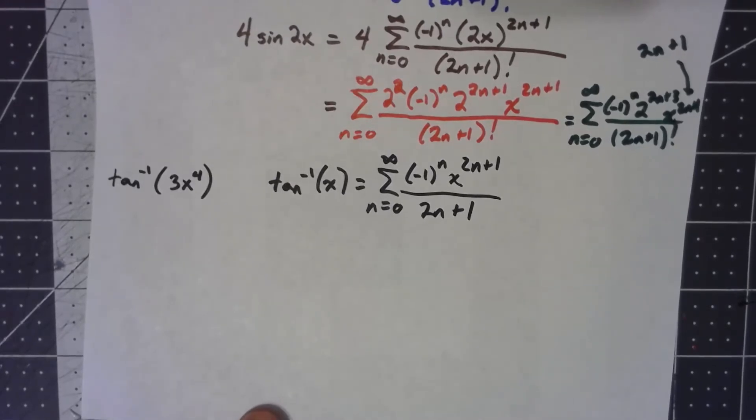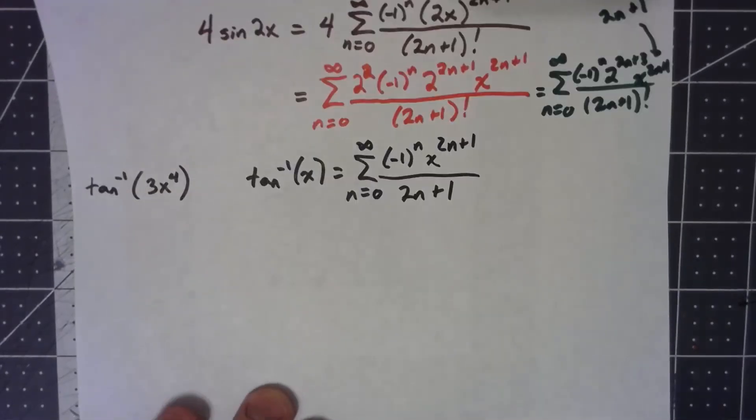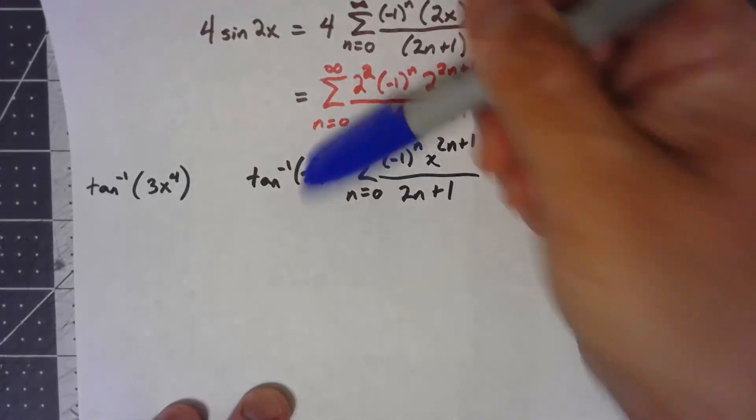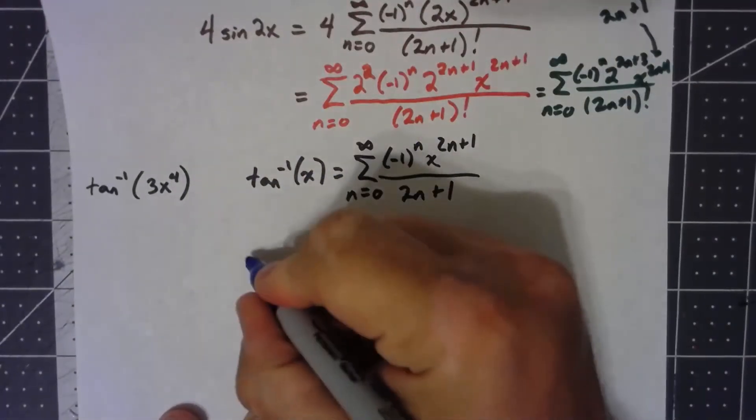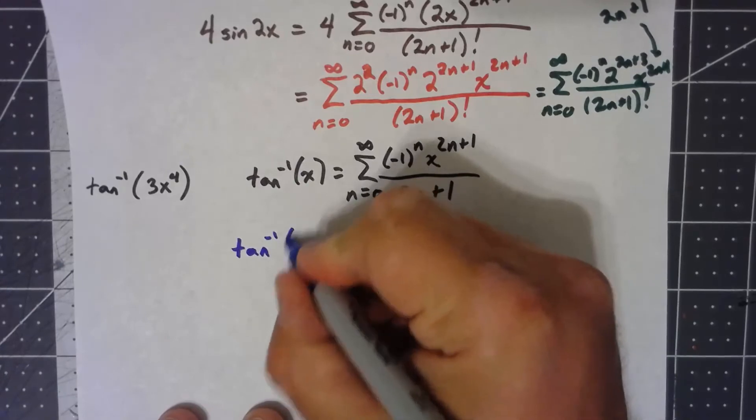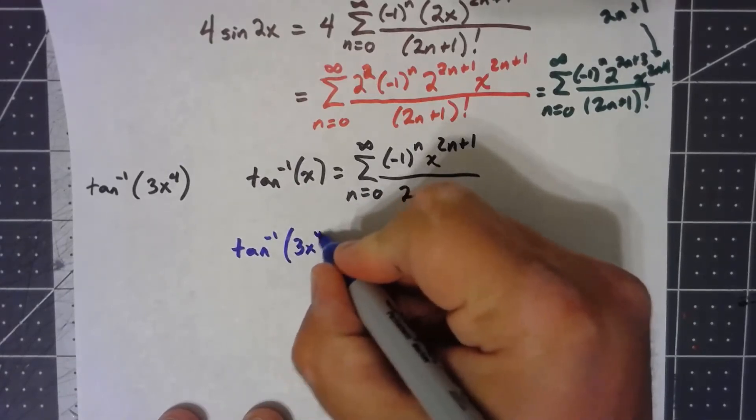So if I put in a 3x to the 4th in place of x, the inverse tangent of 3x to the 4th.